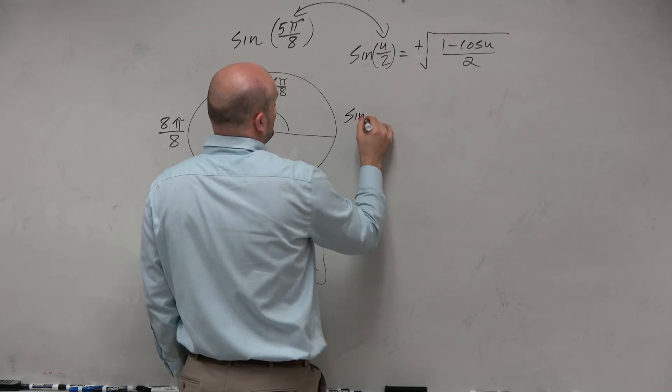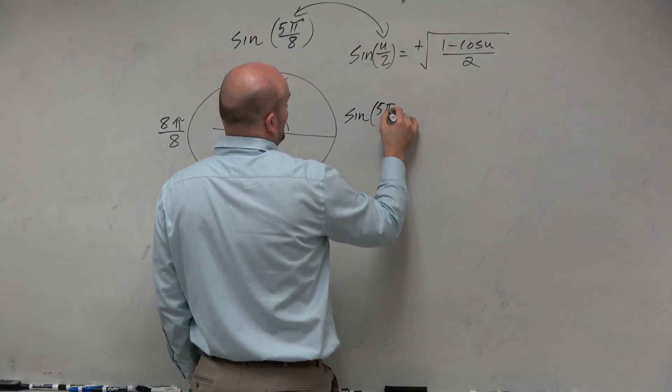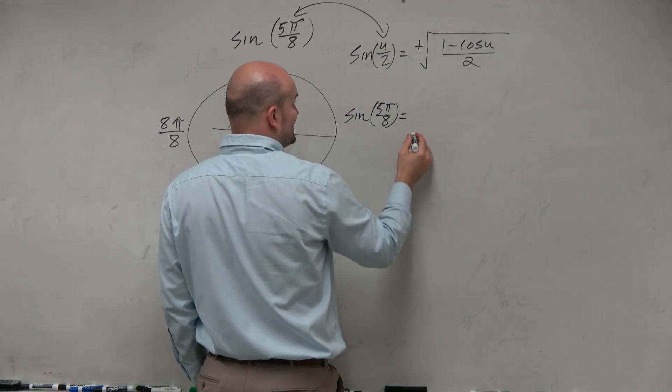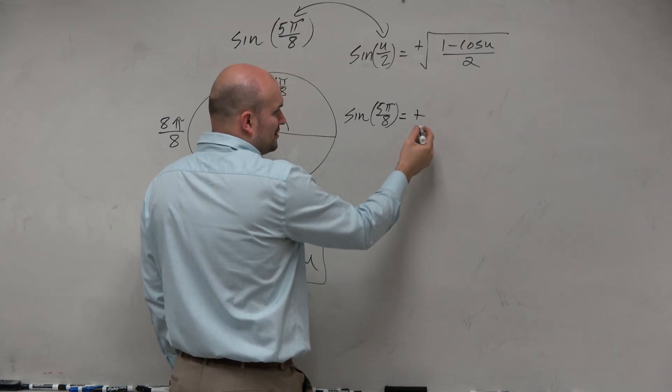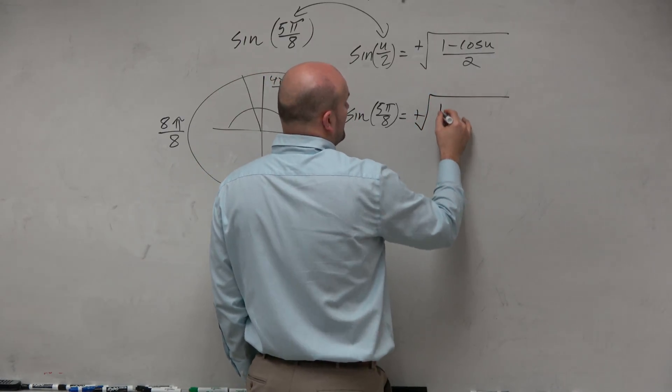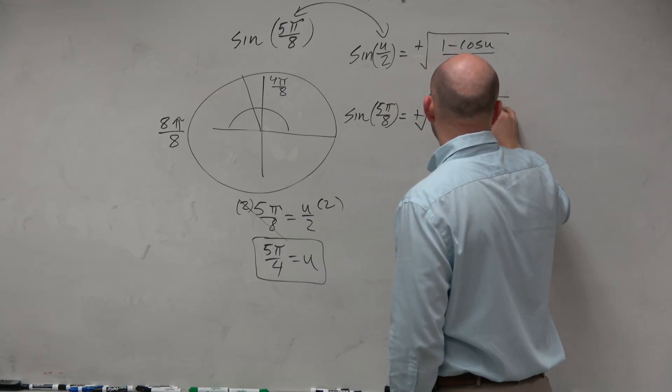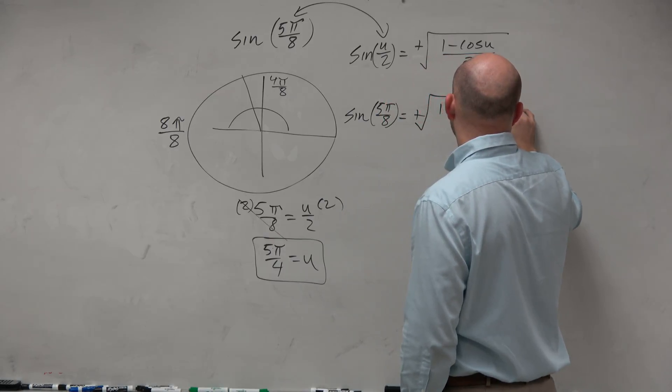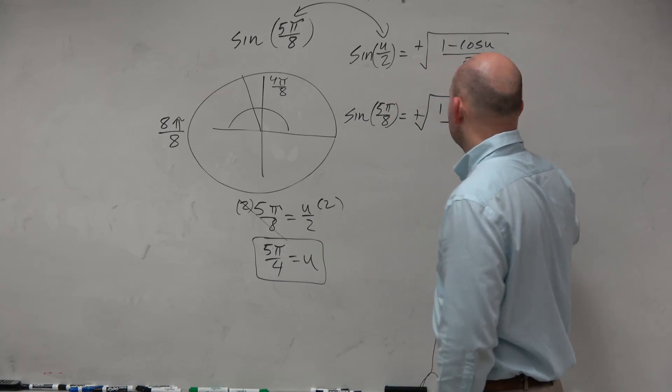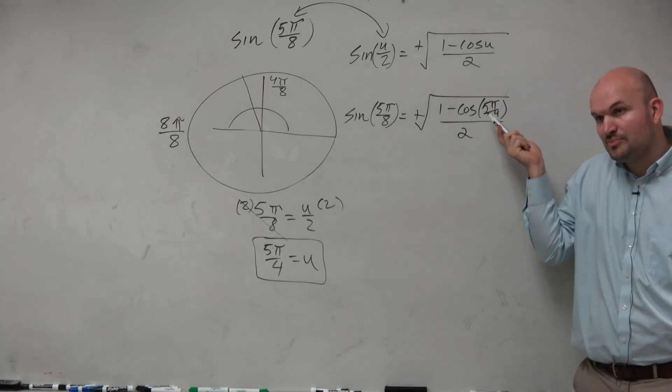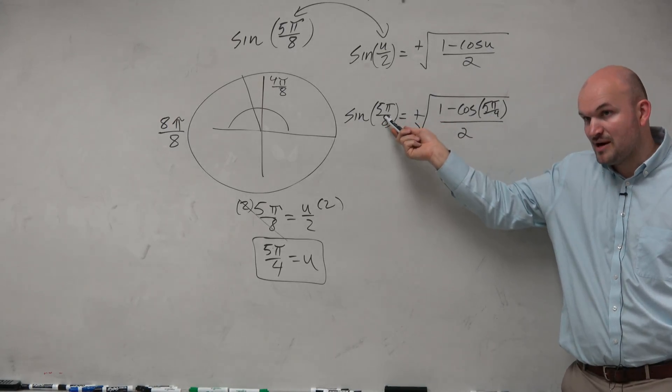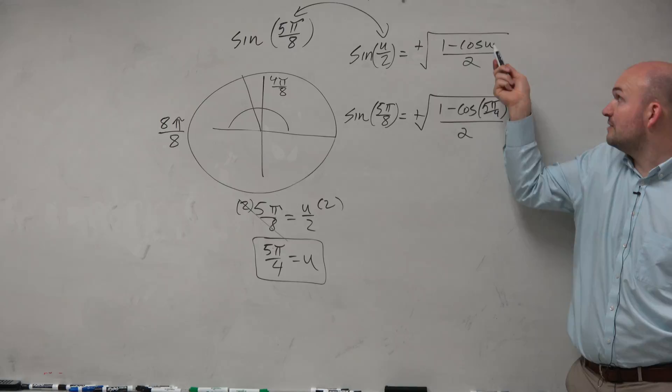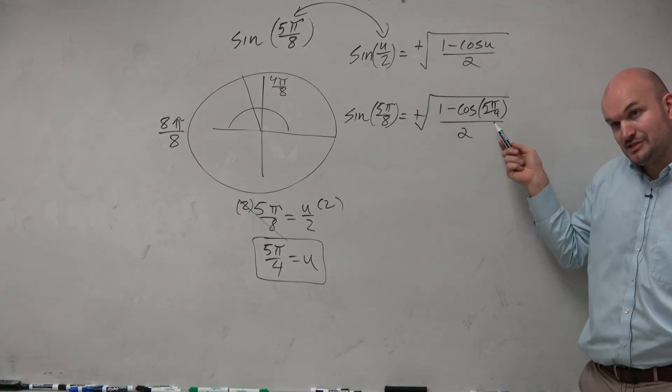So if I say sine of 5π over 8, that's equal to the positive square root of 1 minus the cosine of 5π over 4 divided by 2. Again, notice how I'm plugging in 5π over 4, not 5π over 8. That's u over 2. That's u. That's u over 2. That's u.